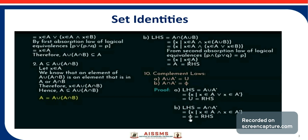For the second complement law, A intersection A complement: by the definition of intersection, the set of all X such that X belongs to A and X belongs to A complement is nothing but the empty set (null set). So A intersection A complement equals the empty set.